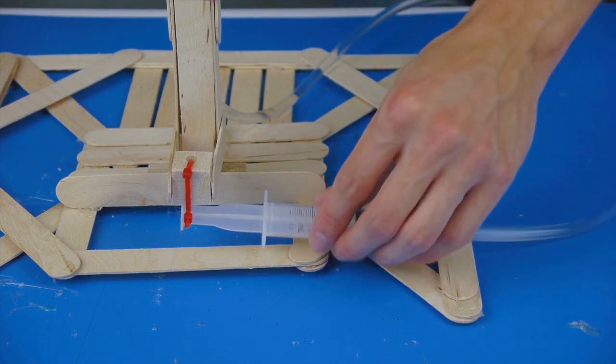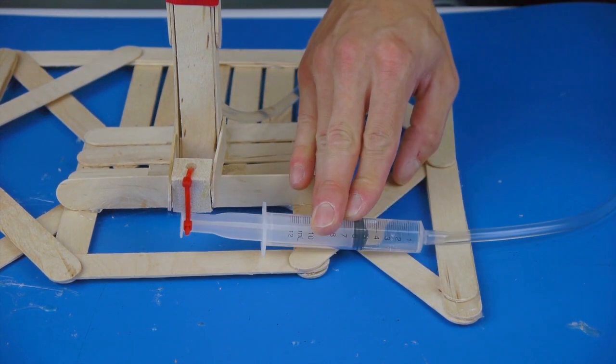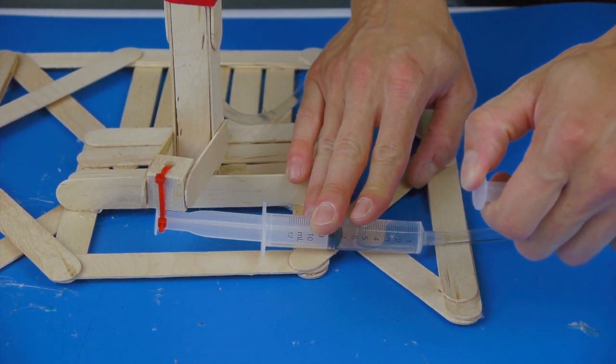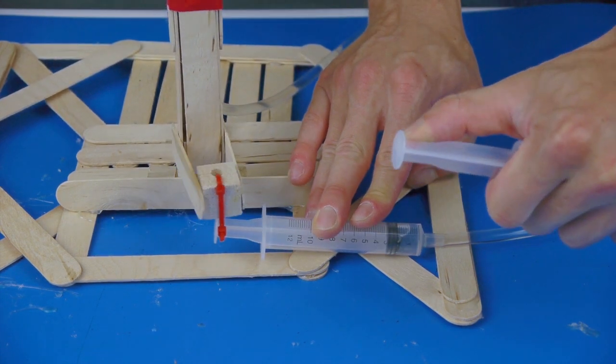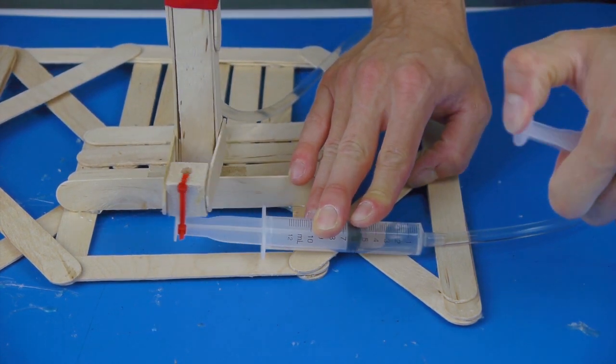Fill the syringe halfway with water, and point the fighting arm straight forward. Hold the syringe in place, and try it out. The fighting arm should move side to side in equal amounts.